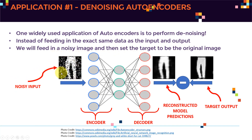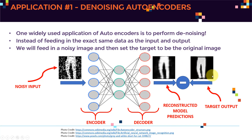We feed in our noisy input — this is an image from the Fashion MNIST dataset, specifically an image of pants or trousers. As you can see, this image is noisy. In training, we feed in the noisy input and the target output is the clean original image without any noise, and the autoencoder will try to reconstruct the image while removing the noise.